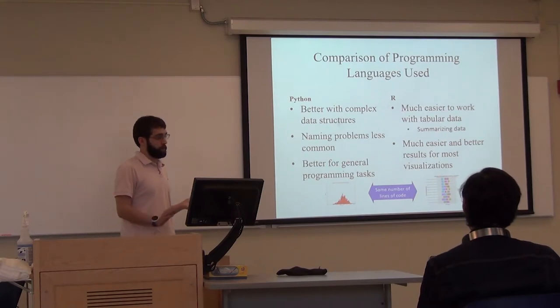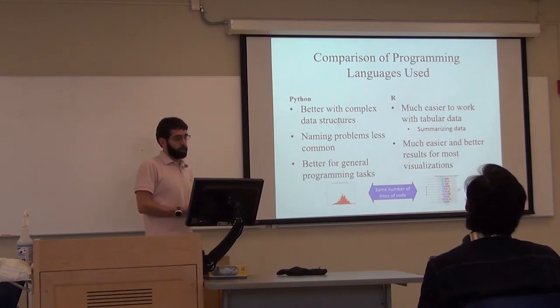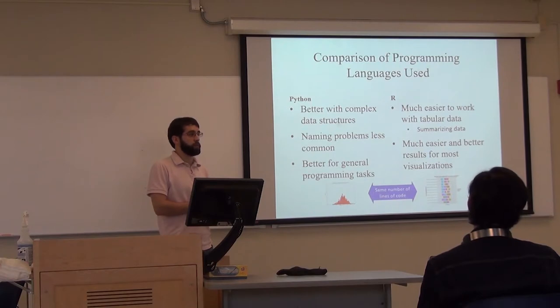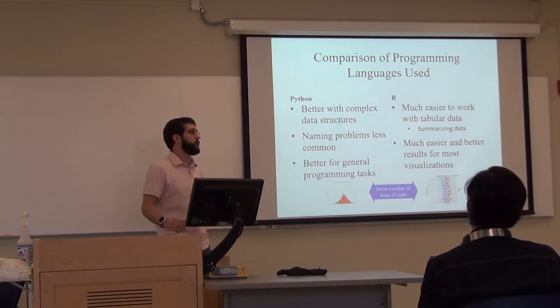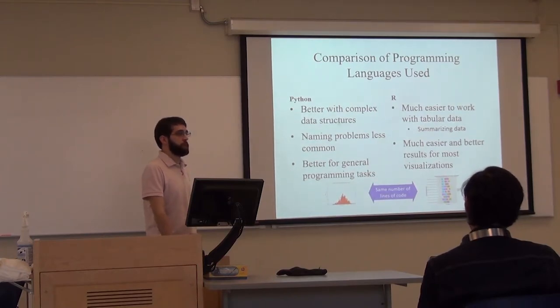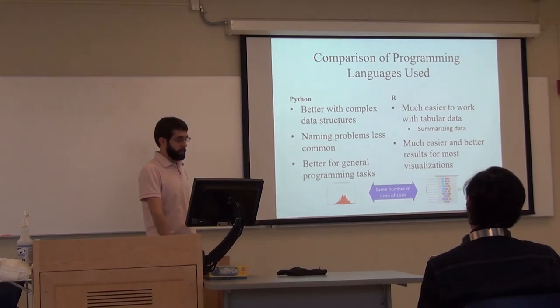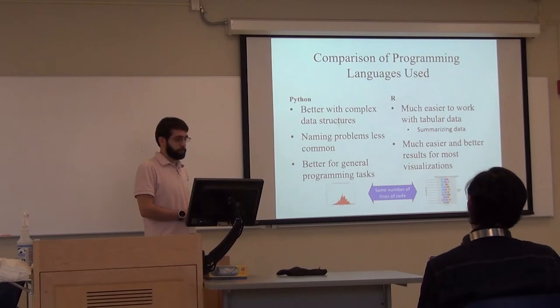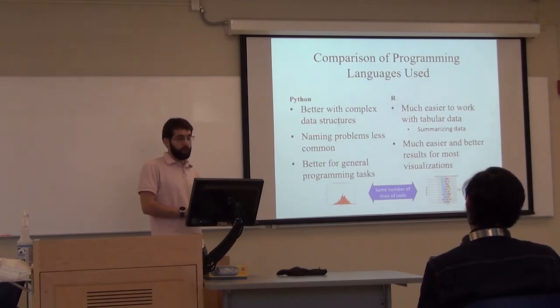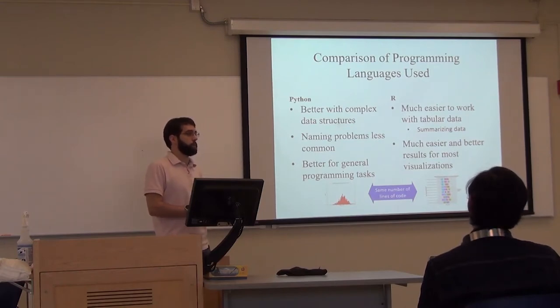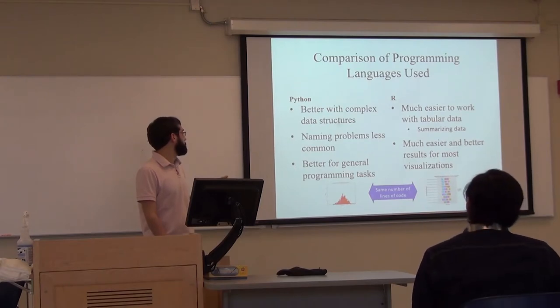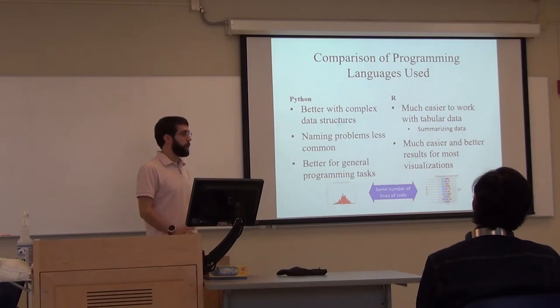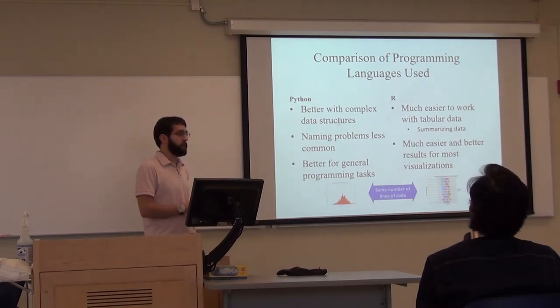Before I go on to the next game, I thought I'd do a little bit of comparison between the languages I used for this project. With Python, it was a lot easier to represent more complicated data structures. The problems with naming functions are less common since R tends to import everything it can. I don't even know all the names of the R functions that are available by default, and I know most of them with Python. Python itself is better for general programming tasks. But R has two major advantages. One, it is a lot easier to work with tabular data, since that's one of the primary considerations that was made when it was designed. Especially with summarizing data, which is how I do most of these visualizations. Yeah, visualizations in R - it's a lot easier to make very beautiful visualizations in R. If they're not animated or anything, I almost always recommend R.